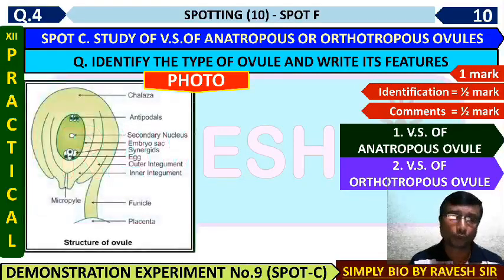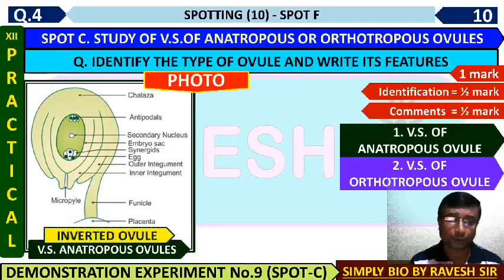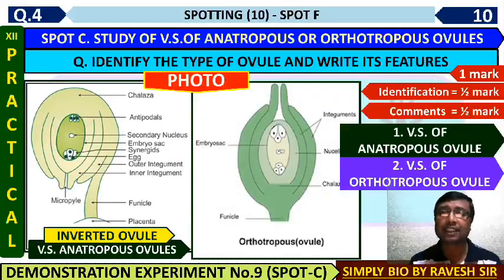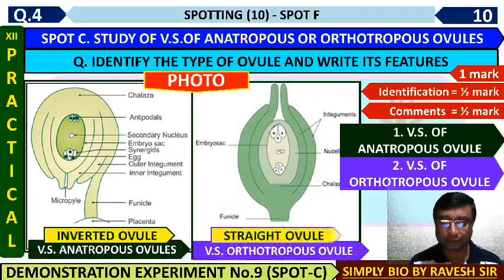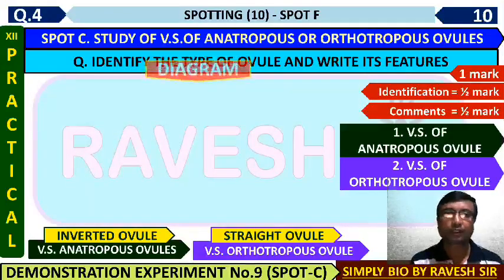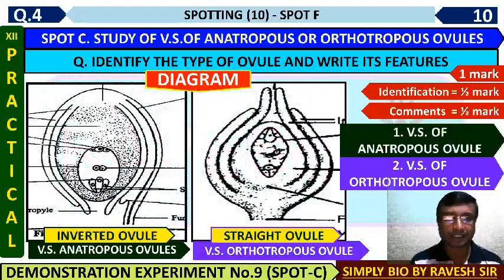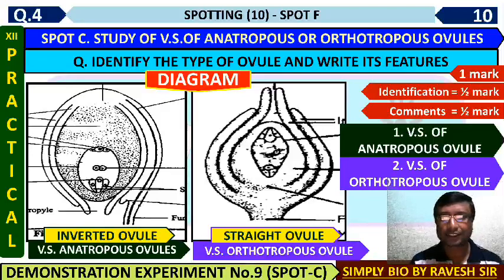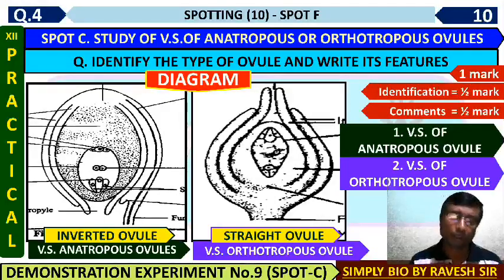This is the picture or photo of the structure of the anatropos ovule, which is the inverted ovule. For orthotropos ovule, the diagram is in the textbook — the inverted ovule diagram and the straight ovule diagram. Either diagram or a model may be given depending on the availability of your lab.